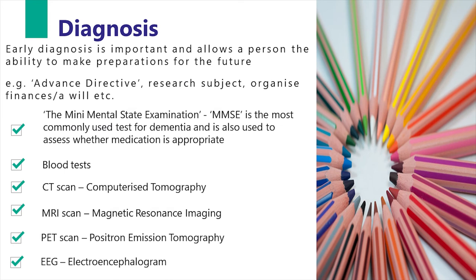Let's have a look at diagnosis. Early diagnosis is important and allows a person the ability to make preparations for the future. There are a number of ways in which dementia is diagnosed: the Mini Mental State Examination (MMSE), which is the most commonly used test and is also used to assess whether medication is appropriate; blood tests; a CT scan or computerized tomography; an MRI scan or magnetic resonance imaging; a PET scan — positron emission tomography — and EEGs.